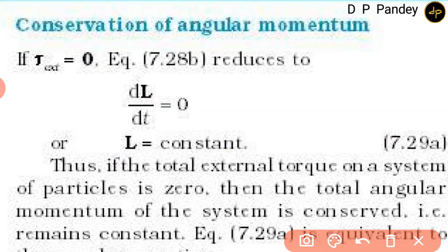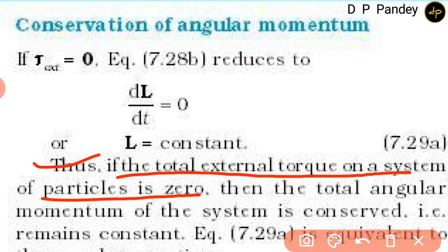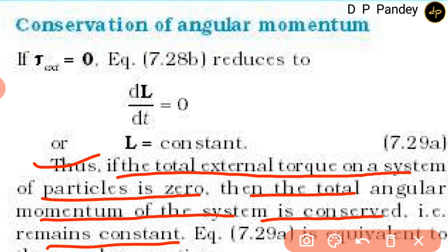If the total external torque on a system of particles is zero, then the total angular momentum of the system remains constant. This is known as the principle of conservation of angular momentum.